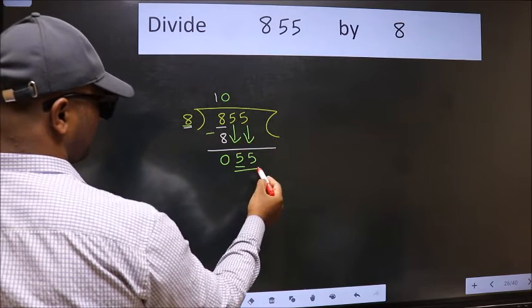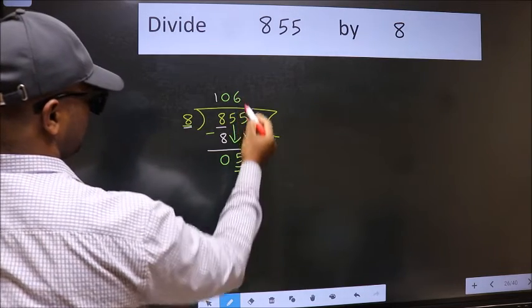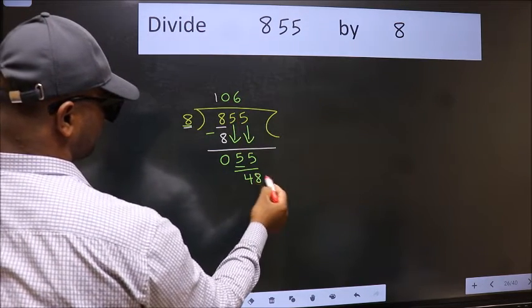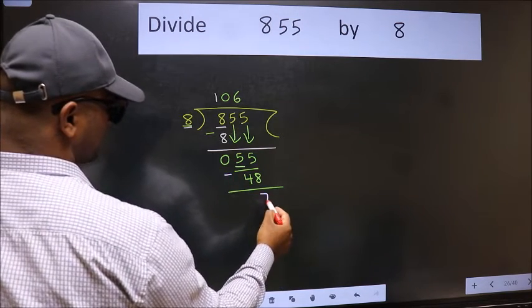Now 55. A number close to 55 in 8 table is 8 × 6 = 48. Now we should subtract. We get 7.